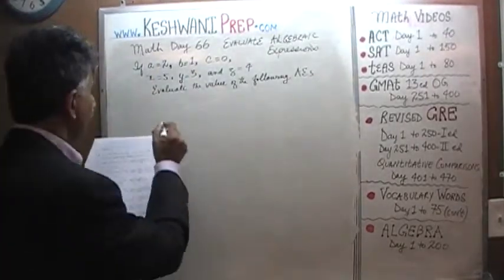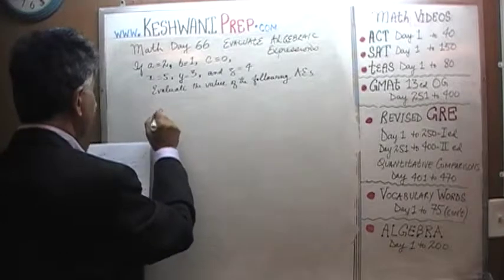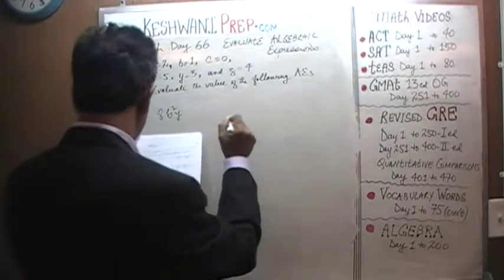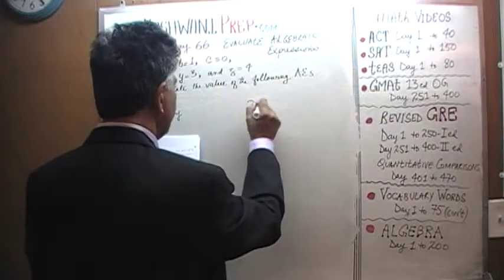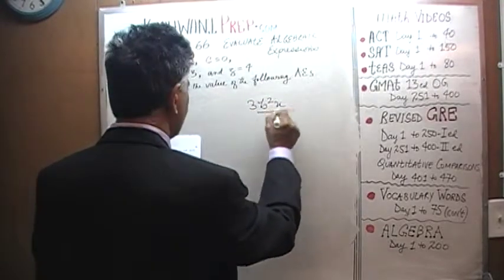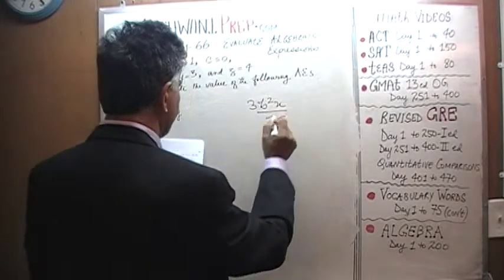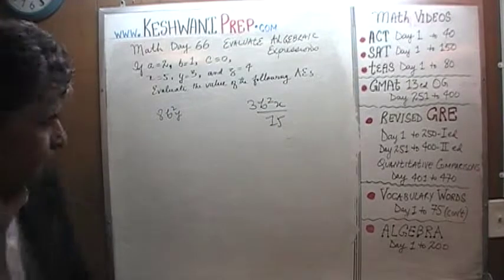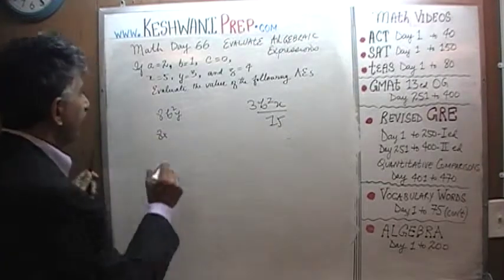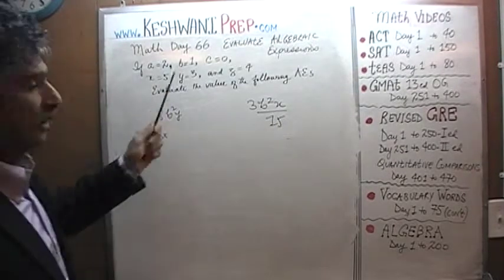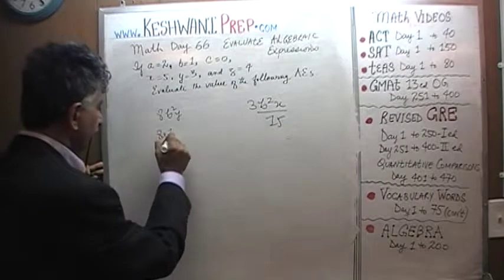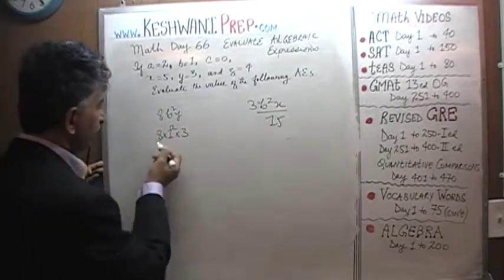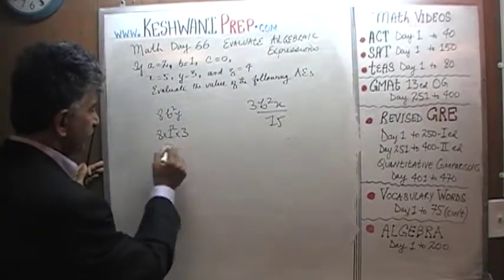Let's do the next problems. 8b squared y. b squared is 1 squared which is just 1, so it's just 1 squared times y which is 3. That's just 8 times 3 which is 24. That was straightforward.